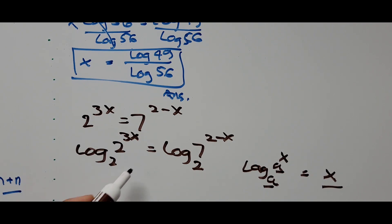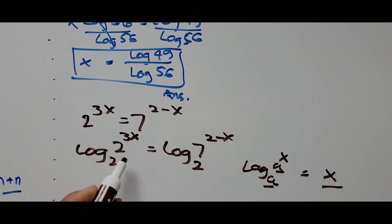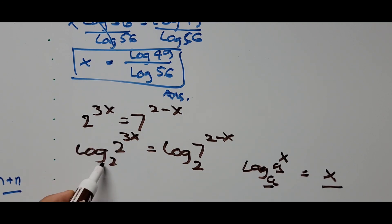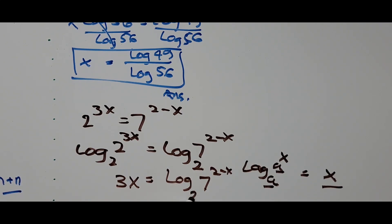Here we're taking the logarithm of base 2 raised to 3x to the same base 2, so the base cancels. We end up on the left side with just the exponent: 3x equals logarithm of 7 raised to 2 minus x, to base 2.